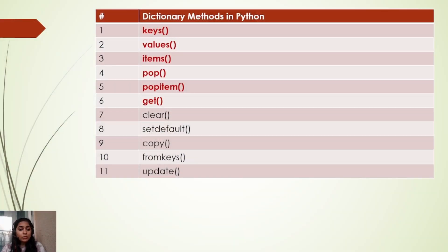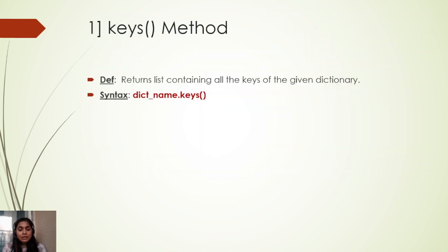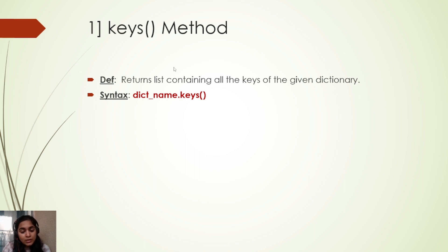In this part we will be covering the following methods: keys, values, items, pop, popitem, and get. Let's begin with the first method, which is keys. As we all know, a dictionary is a data structure which has data stored in the form of keys and values.